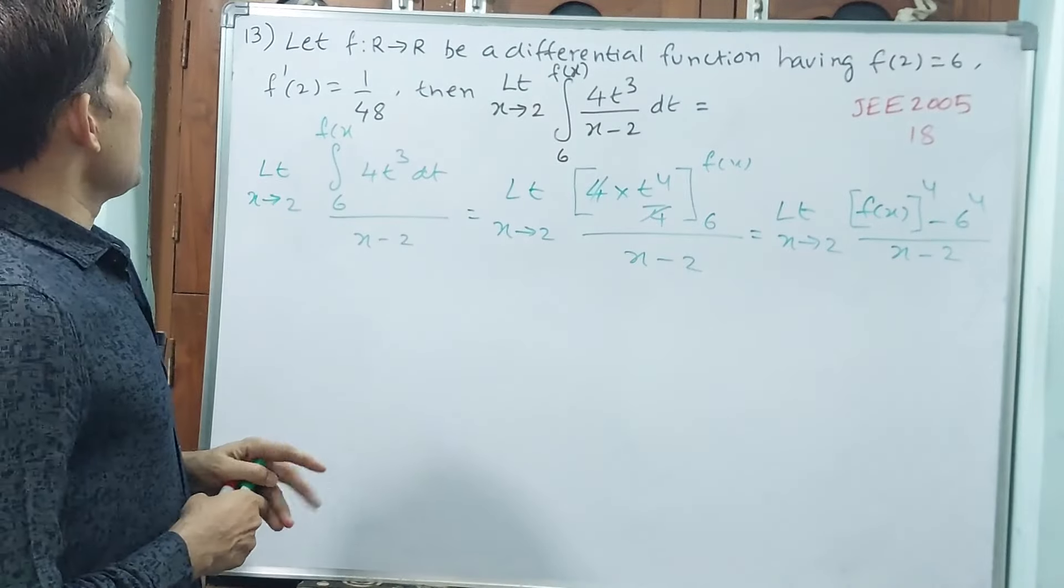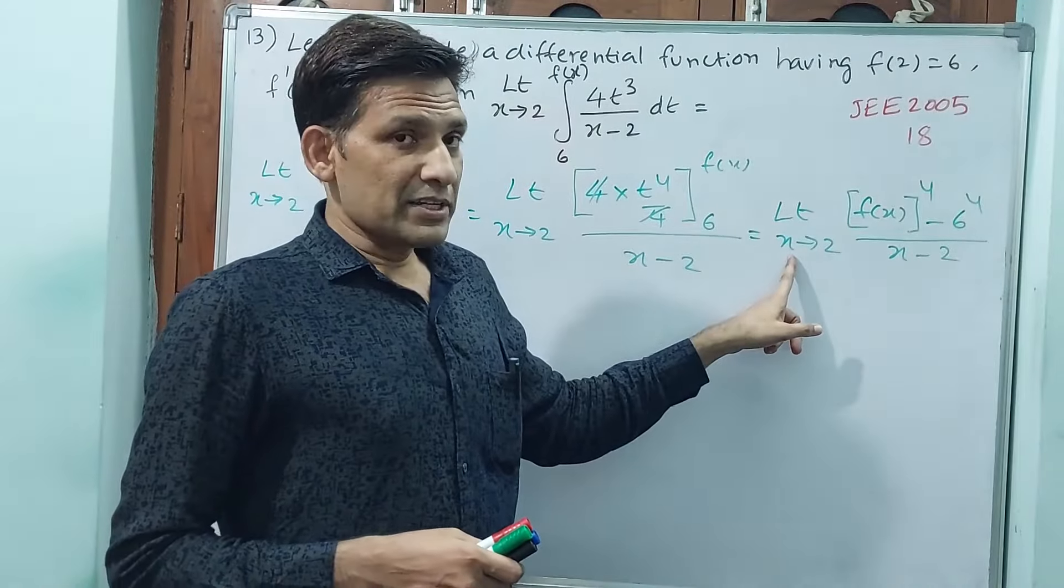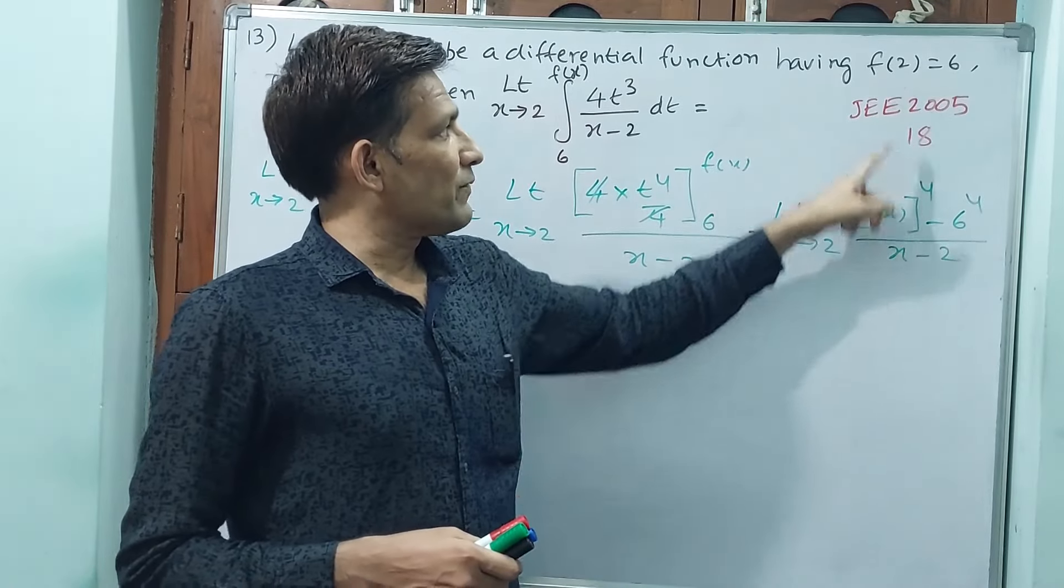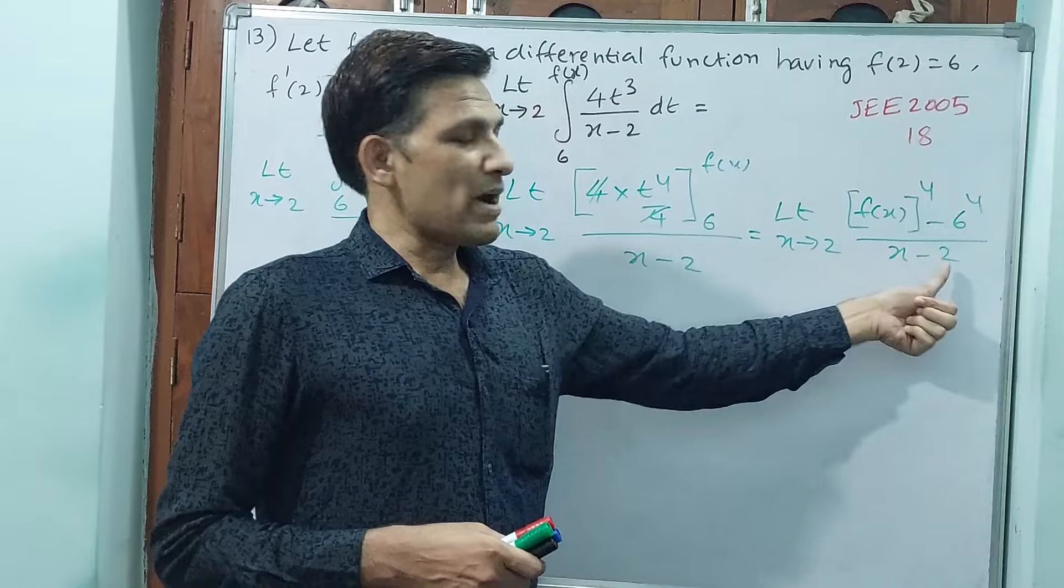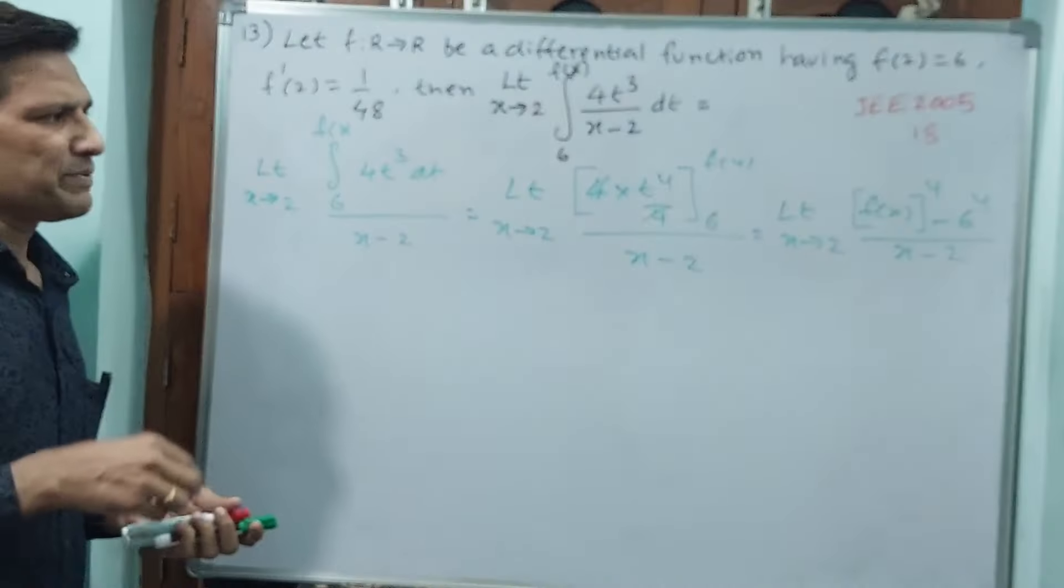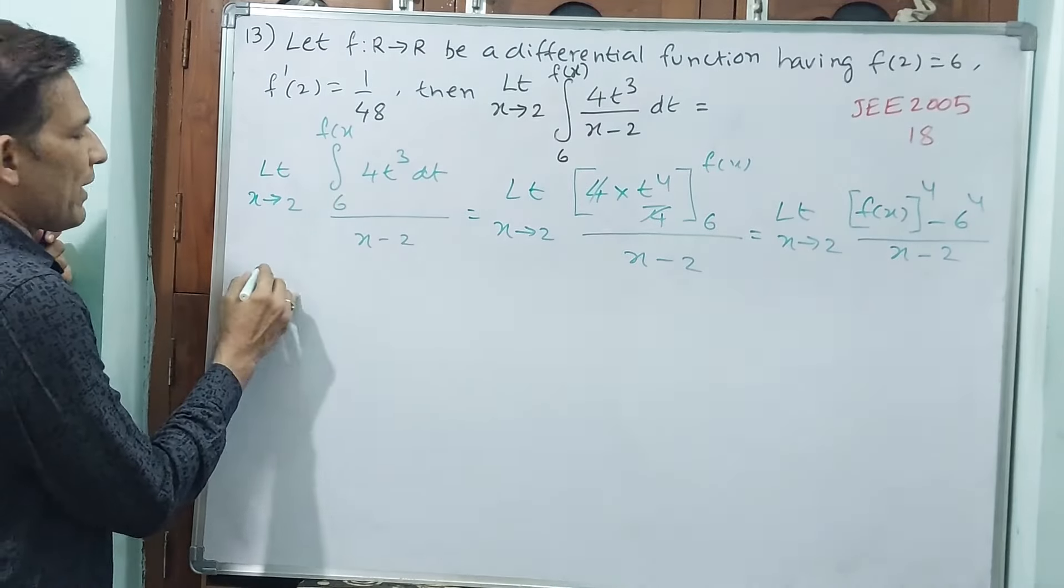Now, go back and see, in x place, if you give 2, f of 2 is 6, 6 to the power of 4 minus 6 to the power of 4, 2 minus 2. 0 by 0 is coming. Go for L'Hospital rule.